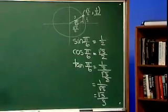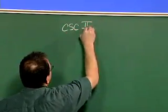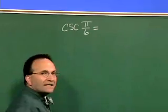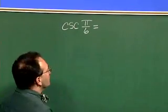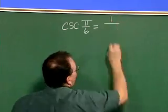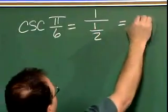So now, let's finish this off by looking at the cosecant of pi over six. Cosecant of pi over six, remember, is one over y. So it's equal to one over, the y value, remember, is one half. And so that's equal to two.